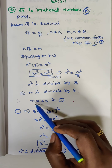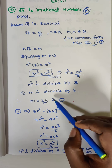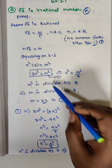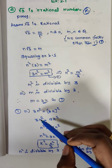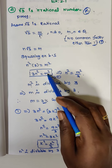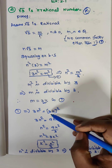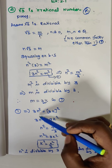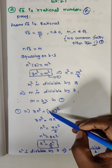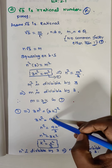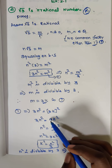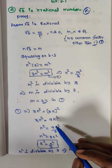Since m is divisible by 3, we write m is equal to 3k. Substituting back: 3n squared equals m squared equals 3k whole squared, so 3n squared equals 9k squared.